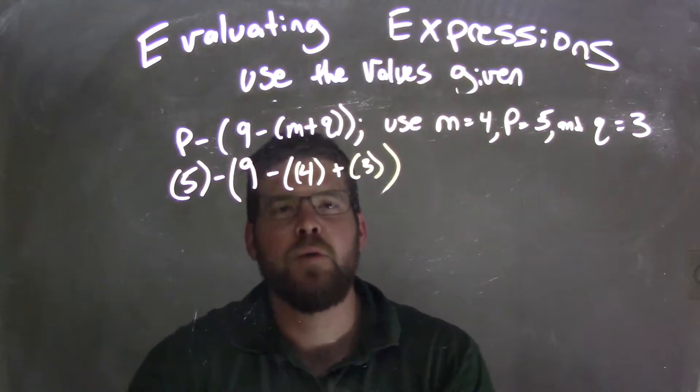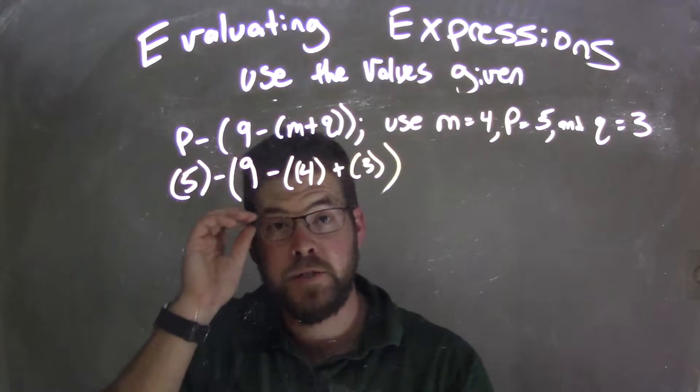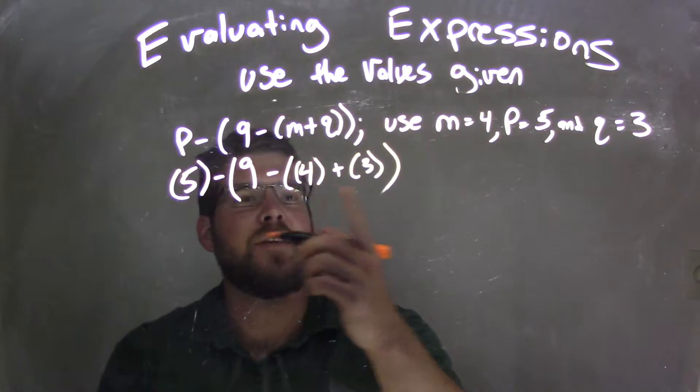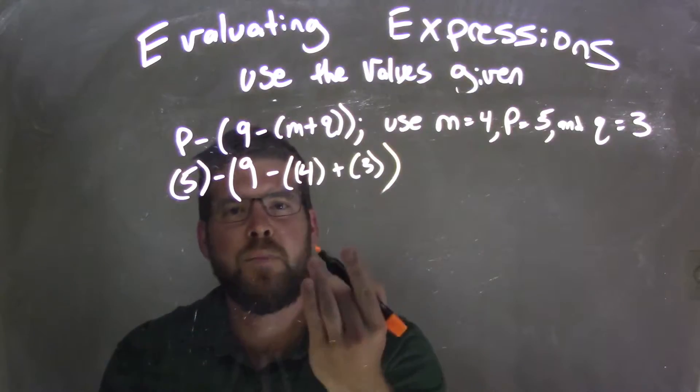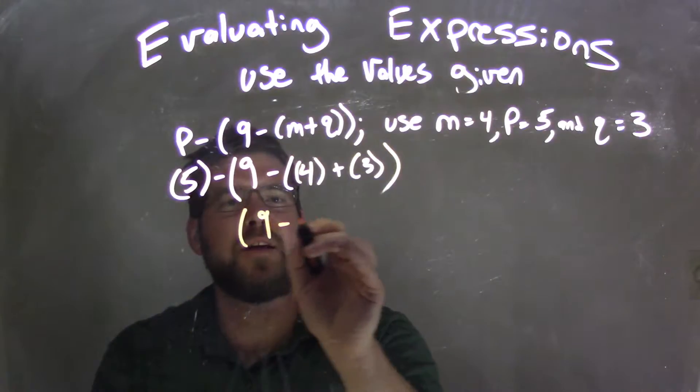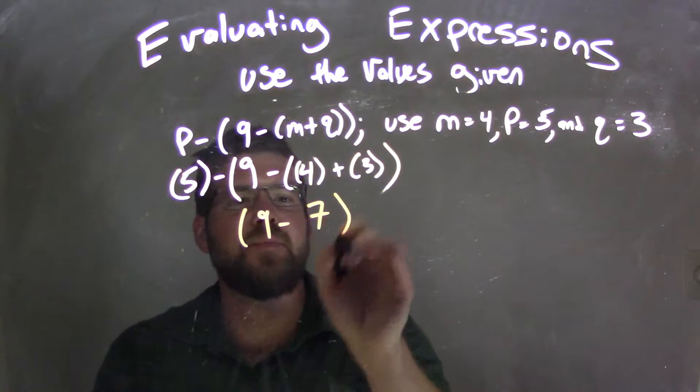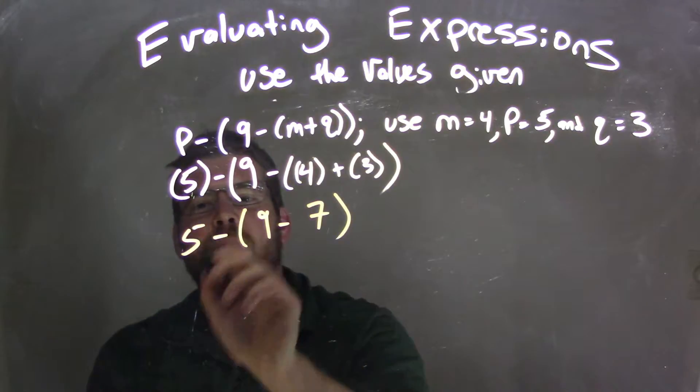So now we need to simplify. Let's remember our order of operations. Inside these sets of parentheses here, I have the 4 plus the 3. I need to combine those together first. So the 9 stays out here, 4 plus 3 is 7, and we have the 5 minus on the outside.